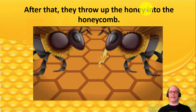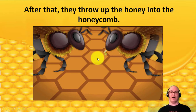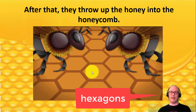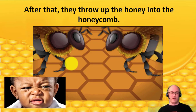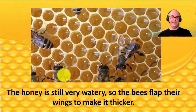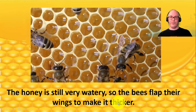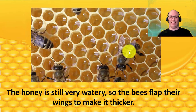After that, the last bee throws up the honey into the honeycomb. The honeycomb is made of hexagons — this is where they store their honey. Some cells they put honey in, and other ones they put eggs in, where the babies go. The honey is still very watery in the honeycomb, so the bees flap their wings to make it thicker — like a fan — and the fan dries out the honey and makes it more thick.